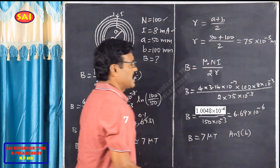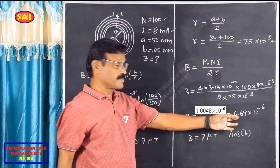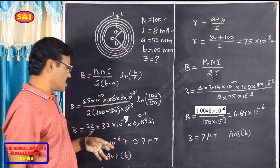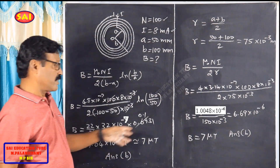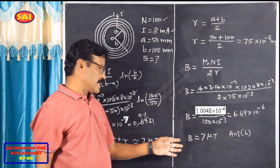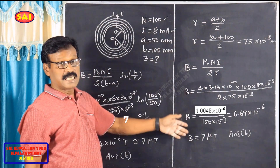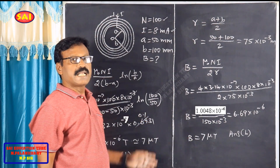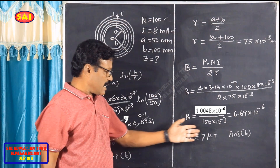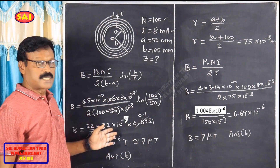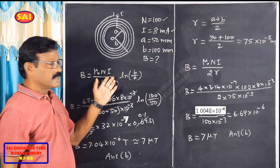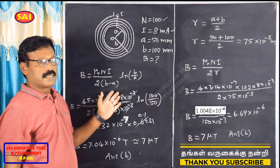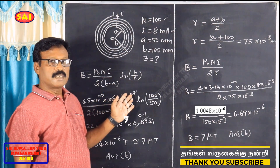Both methods give approximately the same answer: 6.69 and 7.0. If there is a small difference between the two methods, it is acceptable. If you have a standard answer option, this method is fine. If you prefer an exact answer, you should use the logarithmic formula. If you have a long video, you will be able to learn more. Thank you.